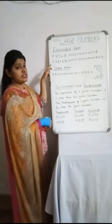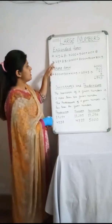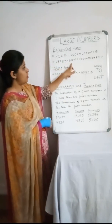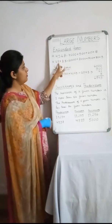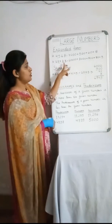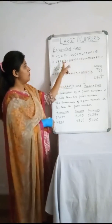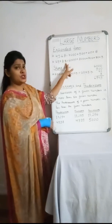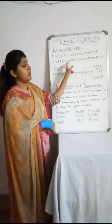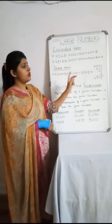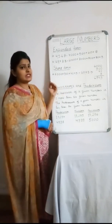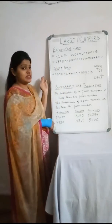Similarly, for the next number 69,783: six is followed by four zeros — 60,000; nine is followed by three zeros — 9,000; seven is followed by two zeros — 700; eight is followed by one zero — 80; and three is not followed by any zero, it is written as it is — 3.